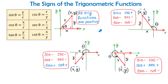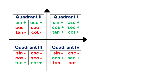Here we have all four quadrants and the signs of the trigonometric functions in each of these quadrants. If we combine all this information together, we get the following diagram. In quadrant 1, all the functions are positive. In quadrant 2, only sine and cosecant are positive. In quadrant 3, only tangent and cotangent are positive. And in quadrant 4, cosine and secant are positive.